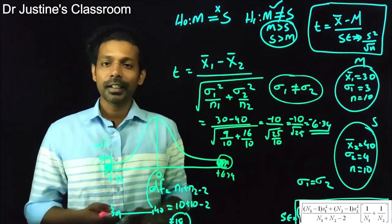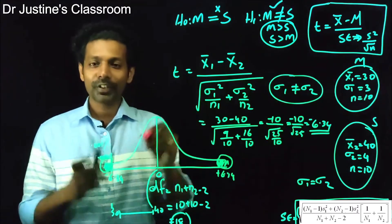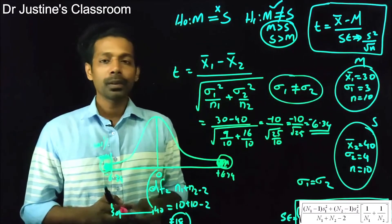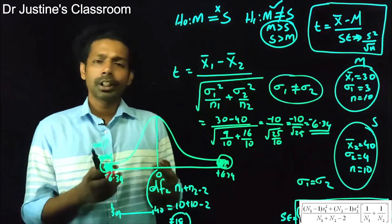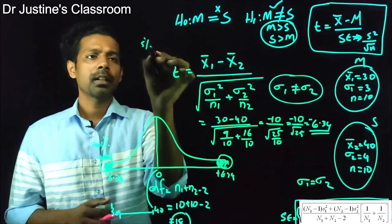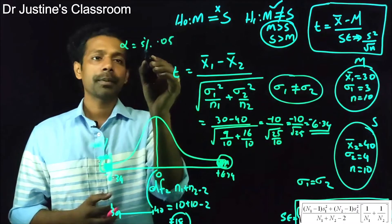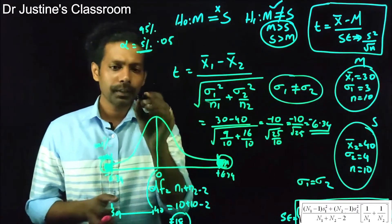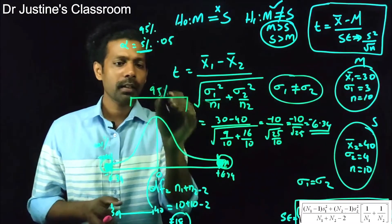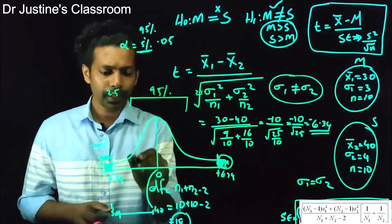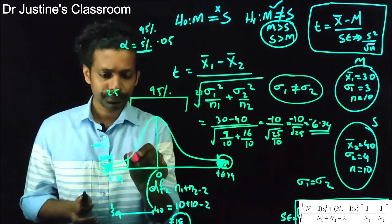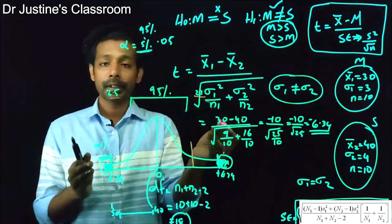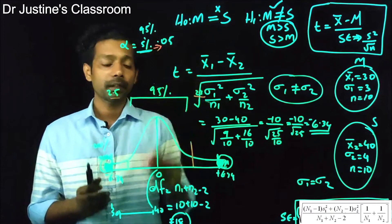In manual calculation, you first decide the level of significance. Generally we use alpha = 0.05, which means a 95% confidence interval. For a two-tailed test, that leaves 2.5% in each tail, giving us a cutoff point on each side of the distribution.